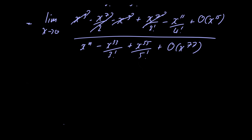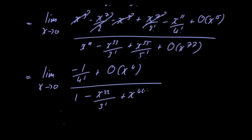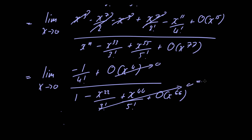Now let's divide everything in this expression by x to the 11th power. Doing so we get the limit as x goes to 0 of minus 1 over 4 factorial, plus O of x to the 4th power, divided by 1 minus x to the 44th power divided by 3 factorial, plus x to the 44th power divided by 5 factorial, plus O of x to the 66th power. As x tends to 0 everything goes to 0, so we're left with minus 1 over 4 factorial, which equals minus 1 over 24.